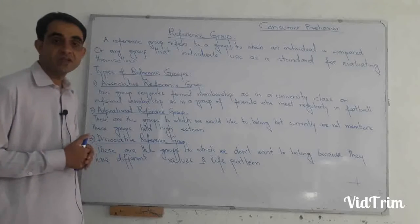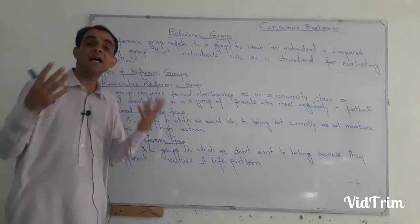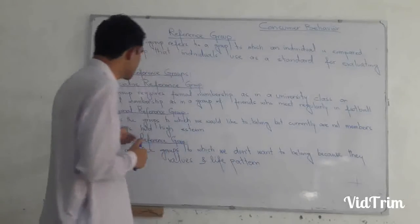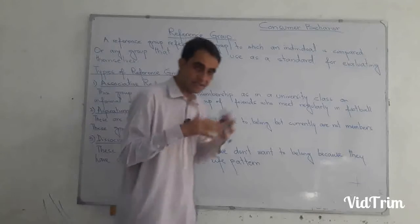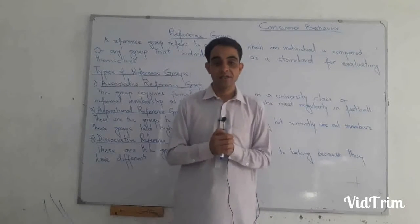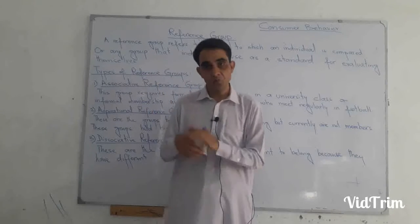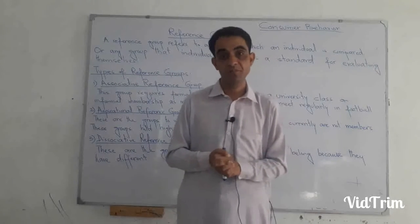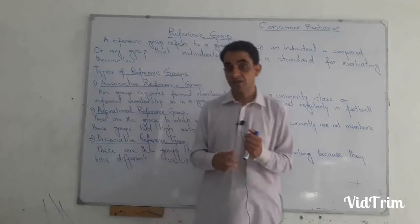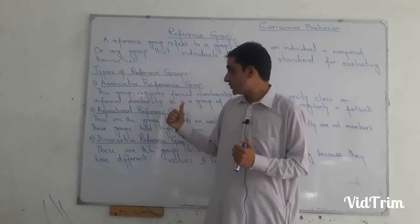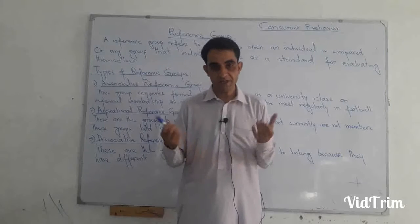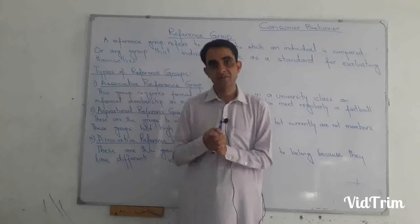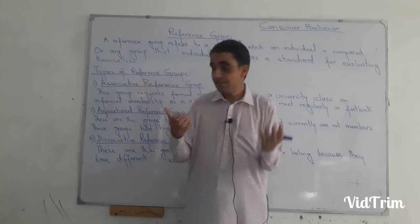These are groups to which we would like to belong but currently are not members of. We want to join those groups and make ourselves able to become like them, to be among them. These groups hold high esteem — they have status and a brand name in society, which is why we want to join them. For example, the English football team is very famous. Marketers utilize this aspirational reference group by making shirts and dresses of the English national team for kids, thereby leveraging the aspirational reference group.